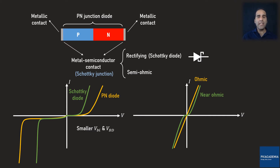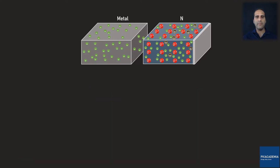Now, what does make a metal semiconductor contact a Schottky Diode or a semi-ohmic contact? In this lecture, I'm going to address this question. At first, imagine we have two separate bulks of metal and n-type semiconductor. Before I connect them to each other, we have to take a look at their energy band diagrams.